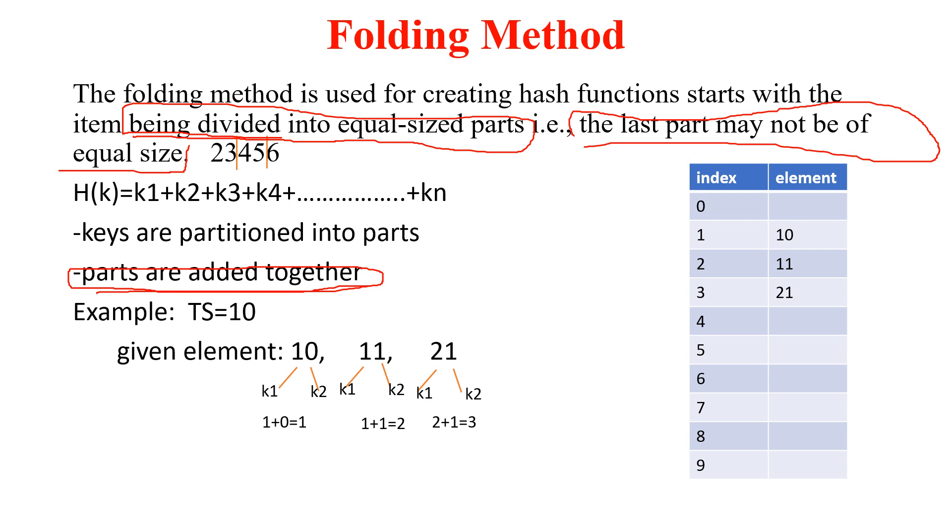For better understanding, I am taking one example. My table size is 10, and given elements are 10, 11, and 21. If we apply the first step and partition 10 into equal size, we will get K1 equals 1 and K2 equals 0.